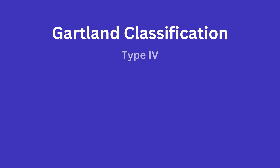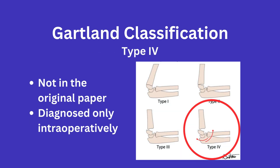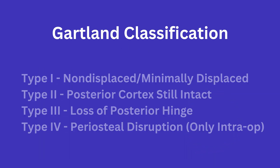Type 4 was not in Gartland's original paper and is only diagnosed intraoperatively. It is unstable in both extension and flexion types with circumferential periosteal disruption. So you can see that the severity of the injury increases as we progress through the types.